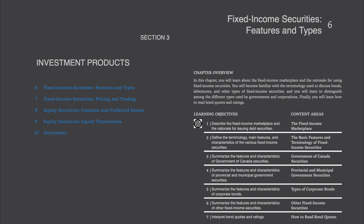In this chapter, you will learn about the fixed income marketplace and the rationale for using fixed income securities. You will become familiar with the terminology used to discuss bonds, debentures, and other types of fixed income securities, and you will learn to distinguish among the different types used by governments and corporations. Finally, you will learn how to read bond quotes and ratings.